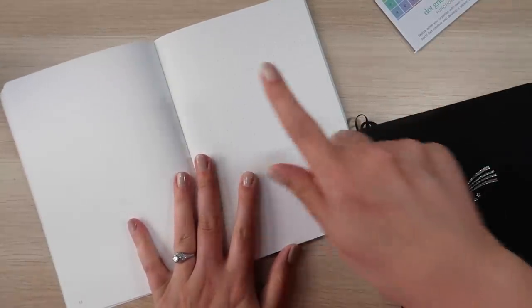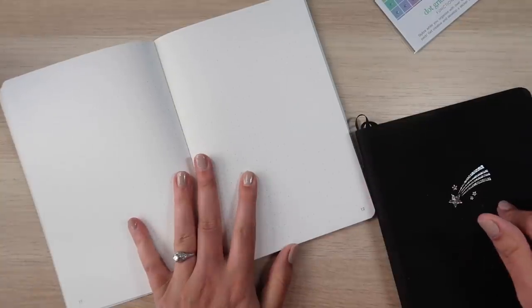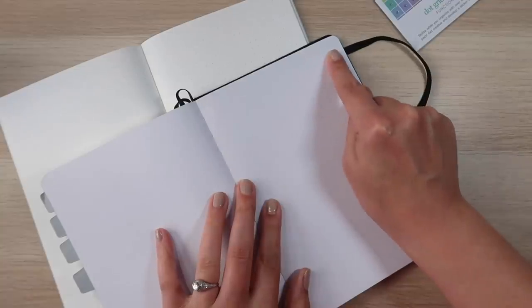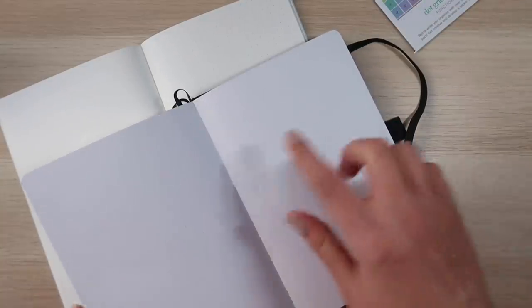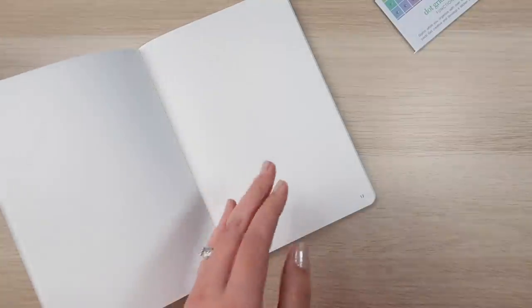Now, in comparison to my Archer and Olive, which does prove the point that the squares in here are slightly bigger than the squares in my Archer and Olive, the Archer and Olive is 26 squares this way and 38 squares this way. So you have a loss of three squares in one direction and two squares in the other. Closer than the other one I looked at, but still a little bit bigger in case that's something you're looking for or curious about.